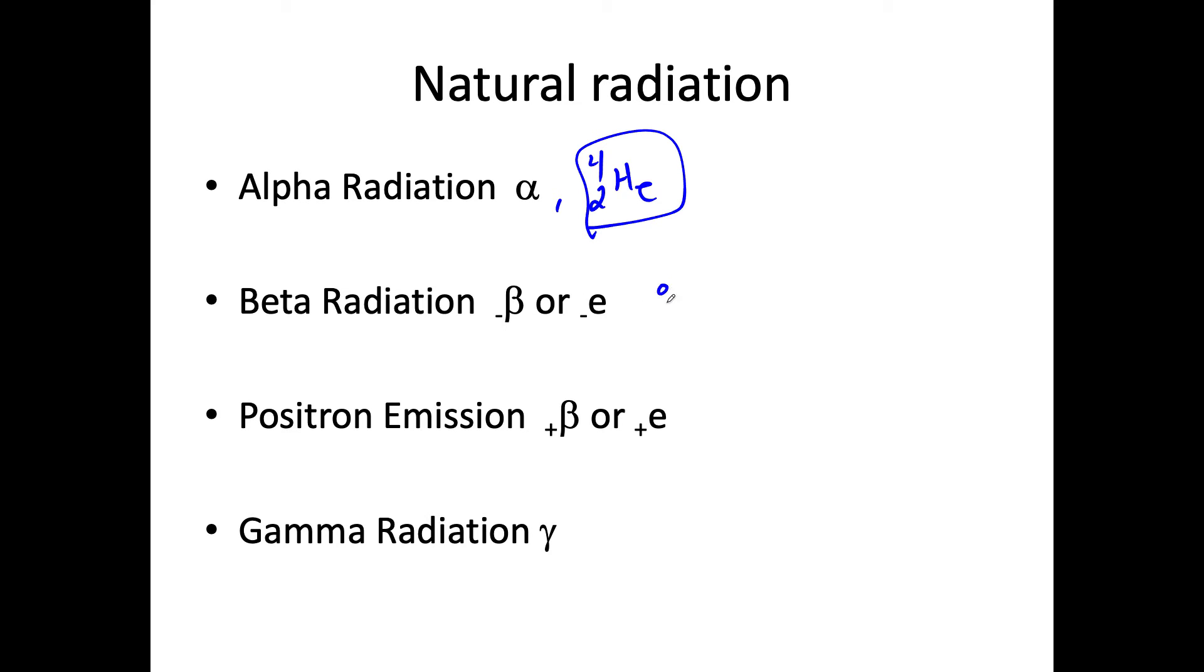Beta radiation is probably, it'll probably put a negative 1 there. For positron, we're going to probably have a positive 1 or just a 1. Gamma radiation is going to look like this. Also, other we need to think about: proton, 1,1 P. Neutron, 1,0 N.